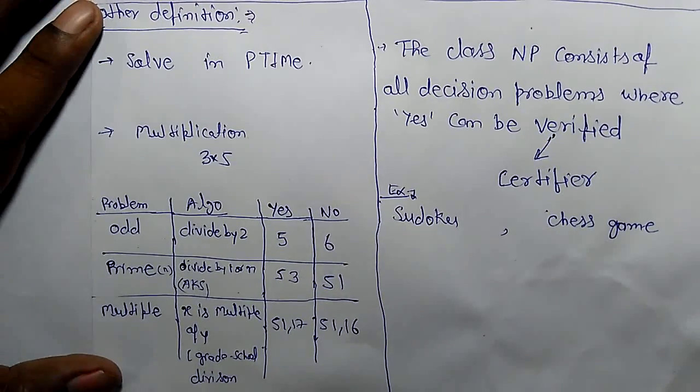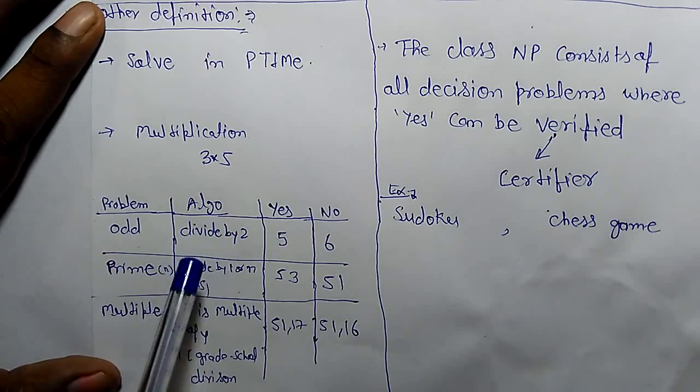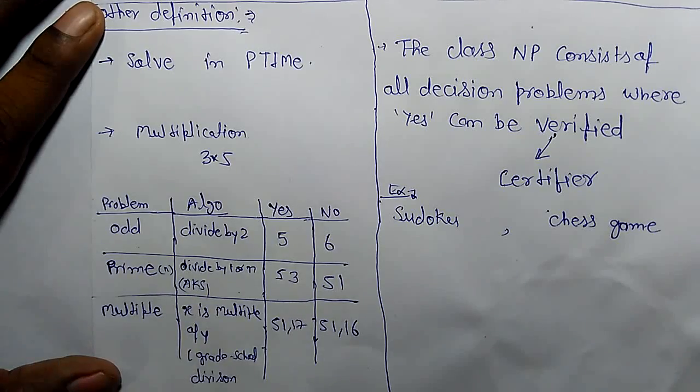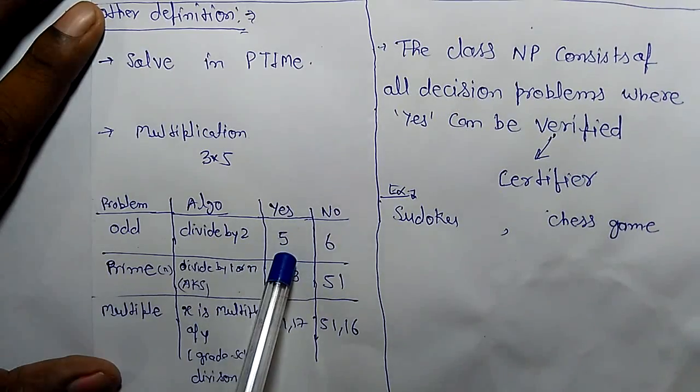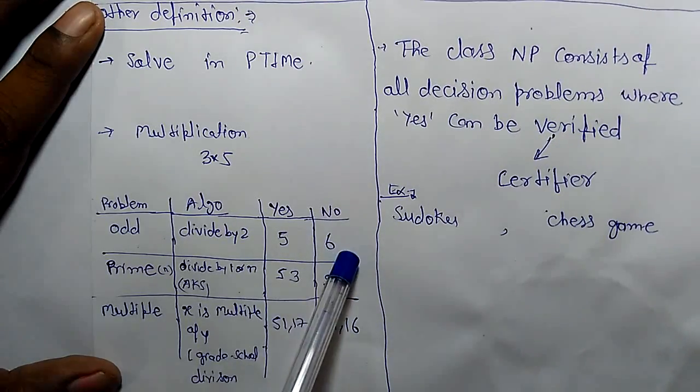For example, if I have given a number and I said please find whether it is odd or not. The algorithm: you divide by 2. If it is divisible by 2 then it is even, otherwise it is odd. Yes or no answer can be given. For 5, it is odd - yes. For 6 - no, it is not odd.